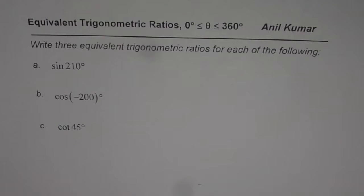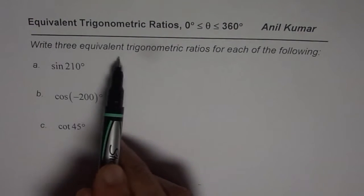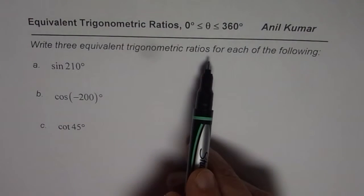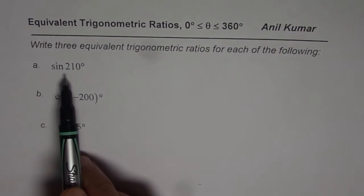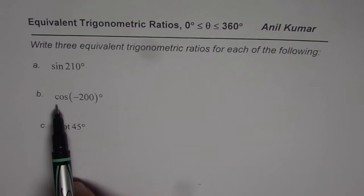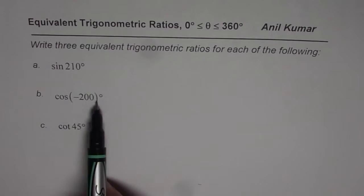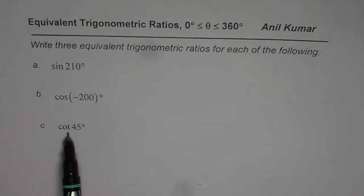I am Anil Kumar and here is a practice question to find equivalent trigonometric ratios when we are considering the angle between 0 to 360 degrees. The question is: write three equivalent trigonometric ratios for each of the following — sine of 210 degrees, cosine of minus 200 degrees, and cotangent of 45 degrees.